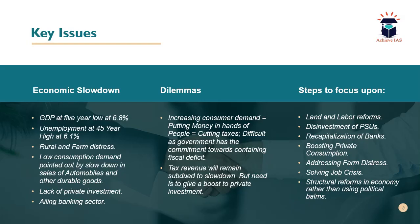So what are the key issues the current government is now facing? The GDP figure recently released showed that GDP was at a five-year low of 6.8%. Also, unemployment was at a 45-year high of 6.1% in 2017-18. You can see the gravity of the issue.